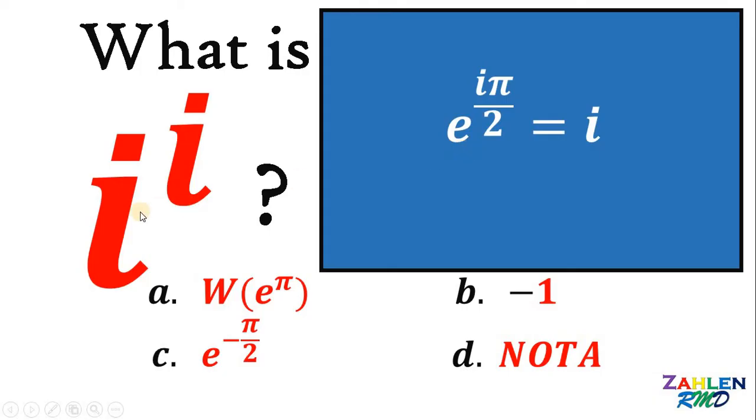Now, our goal here is to have the value of i raised to i. Now, we have i on the right-hand side. To have i raised to i, we need to raise both sides by i. So, we have e raised to iπ over 2 raised to i equals i raised to i.